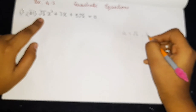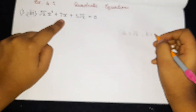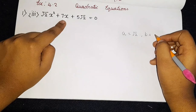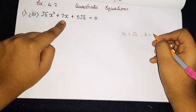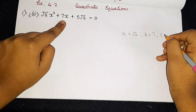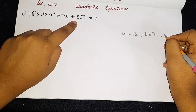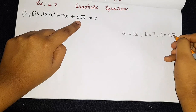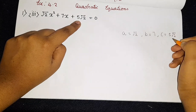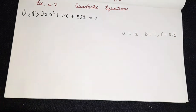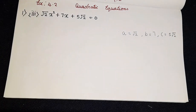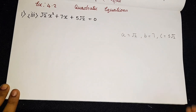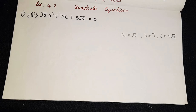And the B value — what is the B value? So here the coefficient is 7. So 7, and what is the C value? The C value is 5 root 2 — of course the constant term. So now we have written the A value, B value, and the C value.